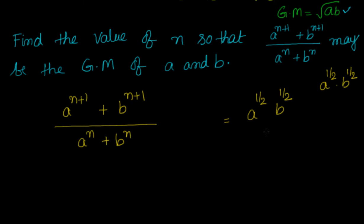When we look at the geometric mean, what we have to get is a to the power of half into b to the power of half. But in the given expression, there are additions in both the numerator and denominator. These two should cancel out, and from the denominator I should get 1 by root of ab, so that the whole expression becomes root of ab.